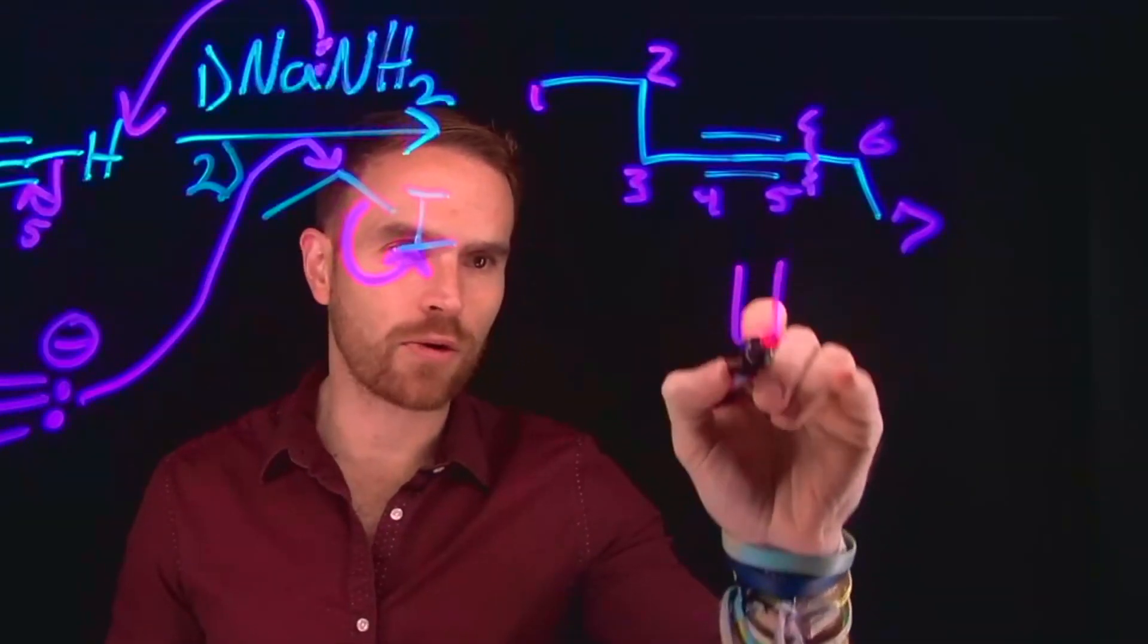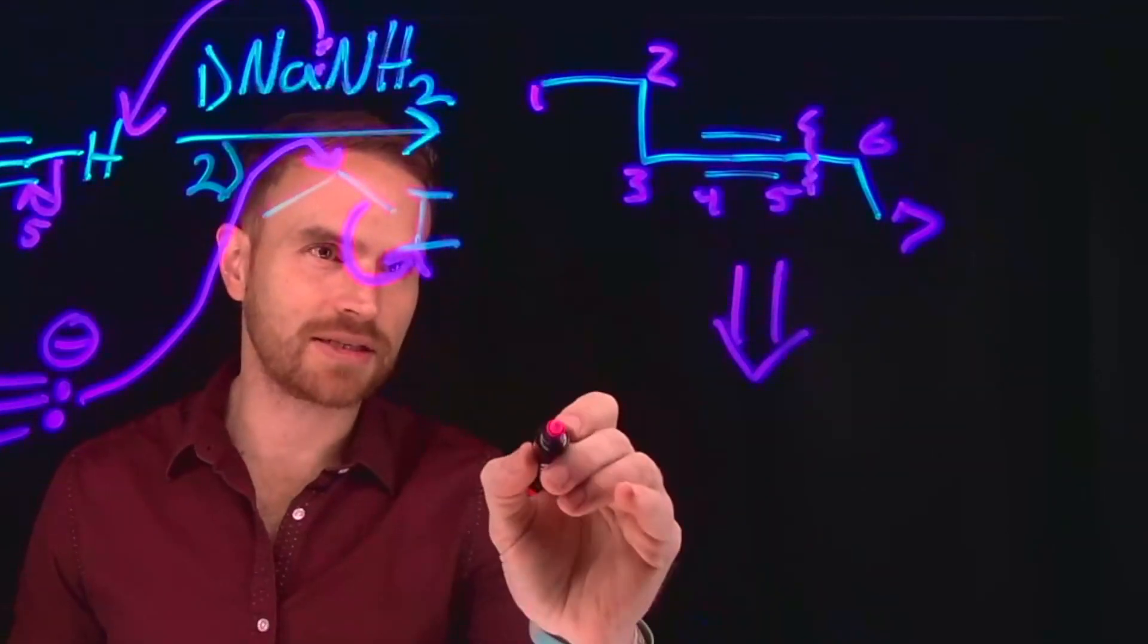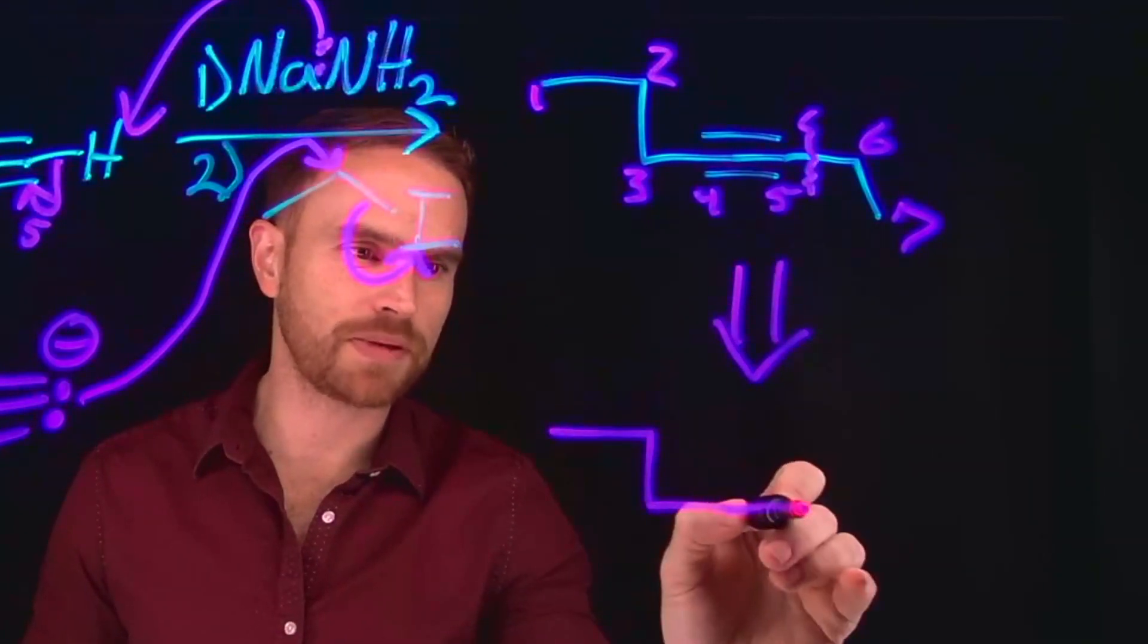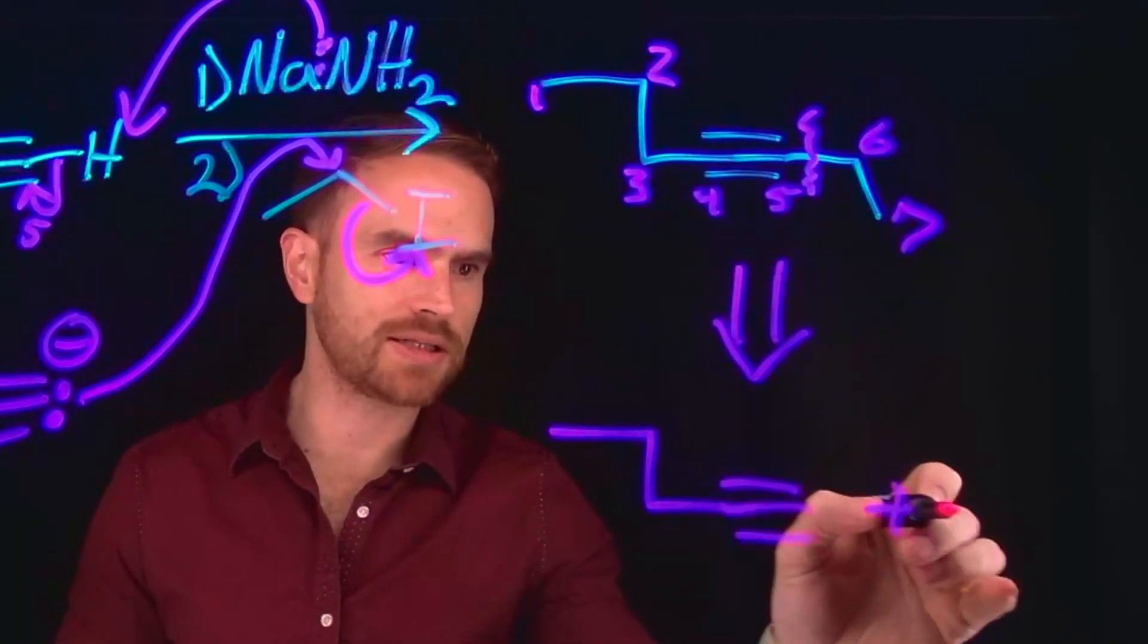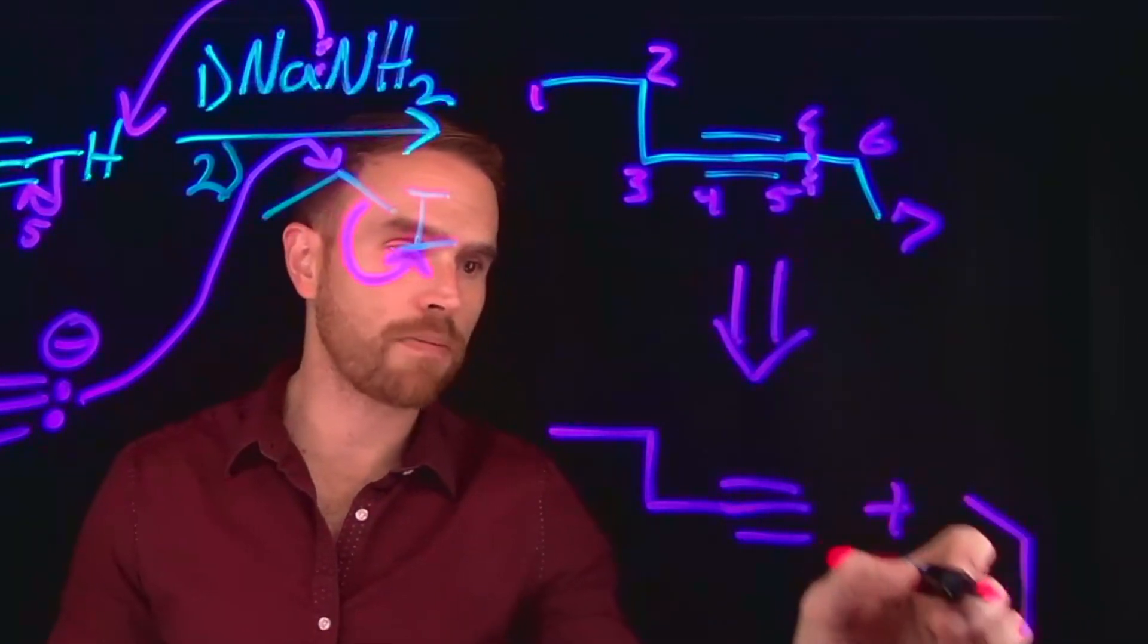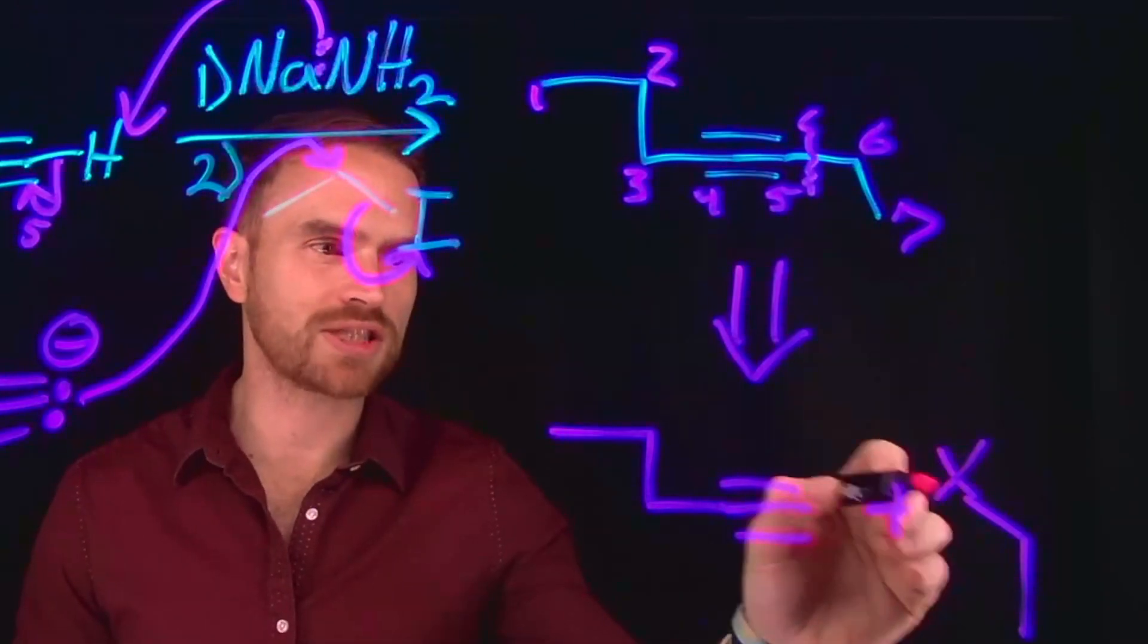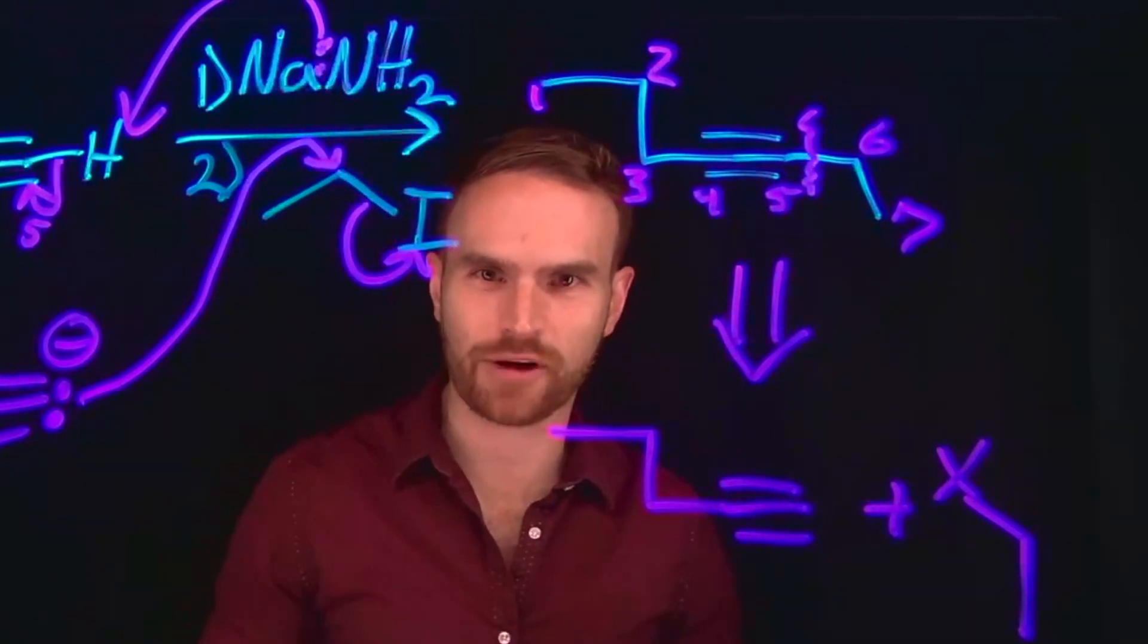So if you needed to work backwards in a retrosynthetic analysis, you could identify that there was a position where you started with an alkyne and the other piece must have been a 2-carbon chain where here there was some halide like iodide, for example.